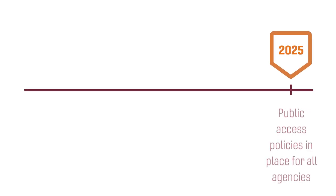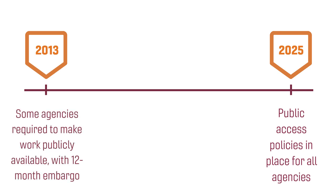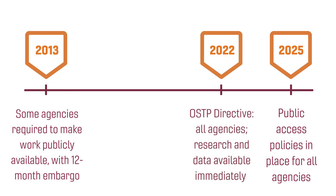OSTP requires agencies to have public access policies in place no later than by the end of 2025. A 2013 Directive required federal agencies with research and development budgets greater than $100 million to make scholarly research available with a 12-month embargo. The 2022 Directive updates this requirement to include all federal agencies, and research and data are required to be publicly accessible immediately, with no embargo.